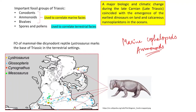It is not that Brachiopods, Gastropods, Crinoids, or Corals are absent — they are also present — but Conodonts, Ammonoids, and bivalves are the three important ones used to correlate marine facies. The terrestrial facies have been correlated with the help of pollens and spores.